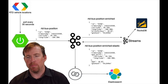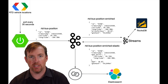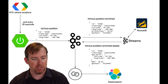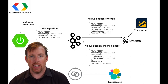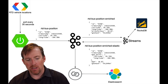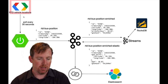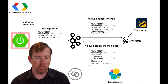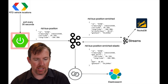They publish data as a protobuf file that you can download. You're allowed to download it every 30 seconds and it's kept up to date. Inside this protobuf file I'm parsing out the positions of all the buses, and I'm doing that in Java Spring — that's what this icon is here.